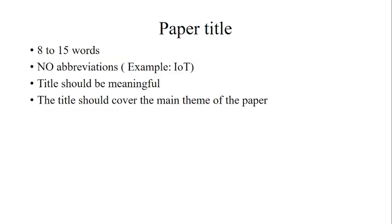First, the paper title. Whatever title you decide must be between 15 to 18 words — excluding helping words. We should not include any abbreviations. For example, IoT is a short form of Internet of Things and should not be included in the paper title. The title should be meaningful, showing the content and meaning of your research, and should cover the main theme of the paper — announcing what you have done in your research.